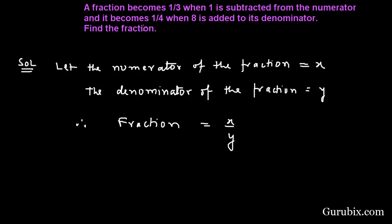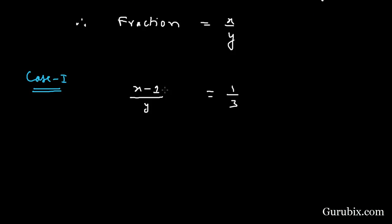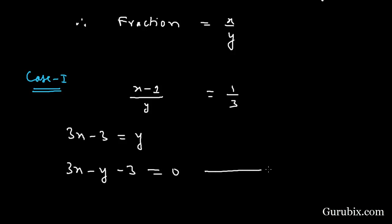Now we move to case one: the fraction becomes 1/3 when 1 is subtracted from the numerator. So the numerator becomes (x − 1) and the denominator remains the same y. Cross multiplying, we have 3x − 3 = y, which gives us 3x − y − 3 = 0. This is equation number 1.